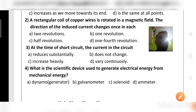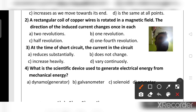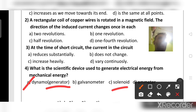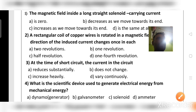What is the scientific device used to generate electric energy from mechanical energy? Mechanical energy is converted into electric energy with a dynamo or generator. A galvanometer is used to detect EMF in a circuit. A solenoid acts as a strong electromagnet. An ammeter is used to measure the rate of electric current in a circuit.